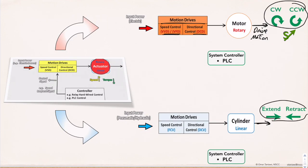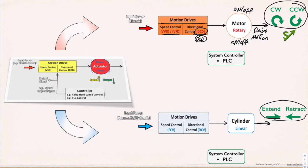If we want only to switch the motor on or off, running it in one direction, then only one direction control drive or contactor is used. If we want to switch the motor in both directions — clockwise or counter-clockwise — then two direction control drives are used. If we want to change the motor's speed, only a variable speed drive is used. If we want to turn the motor in either direction and change its speed, two direction control drives and one variable speed drive are used, and the system controller will have three control signals going to the motion drives block.